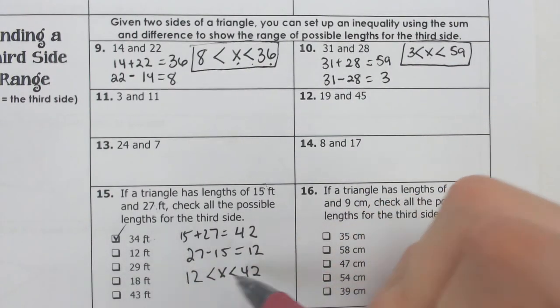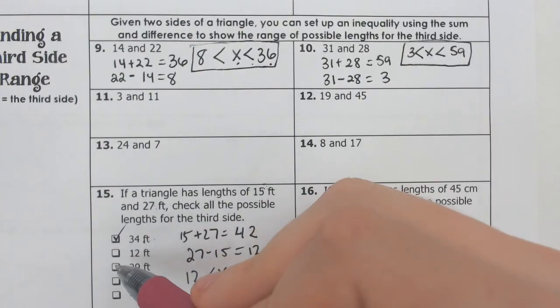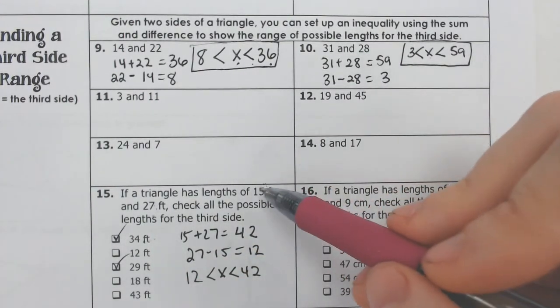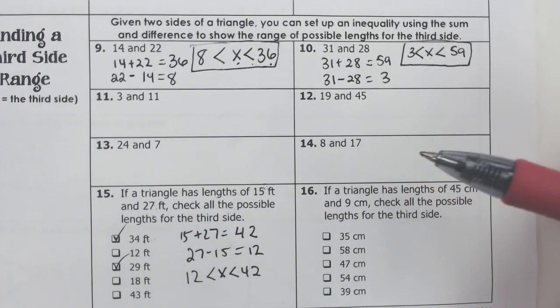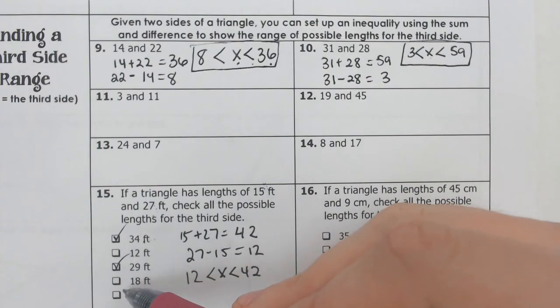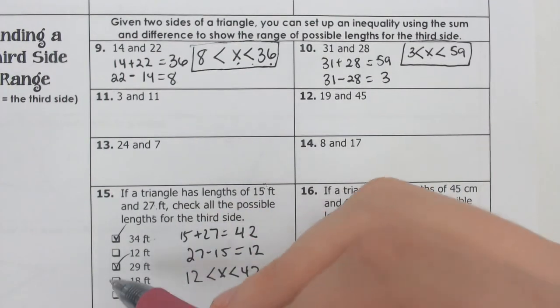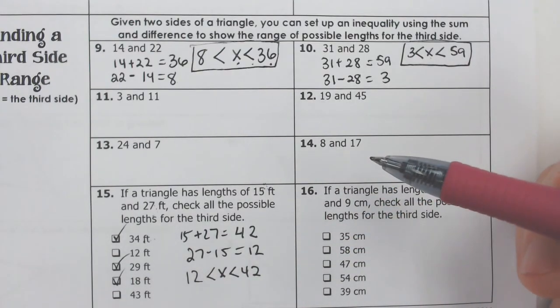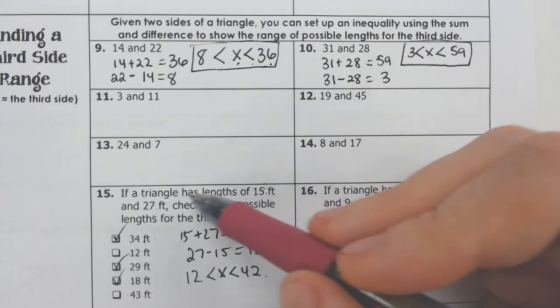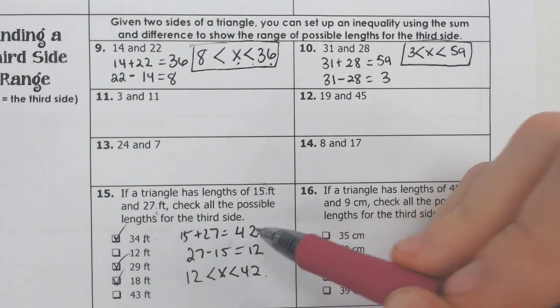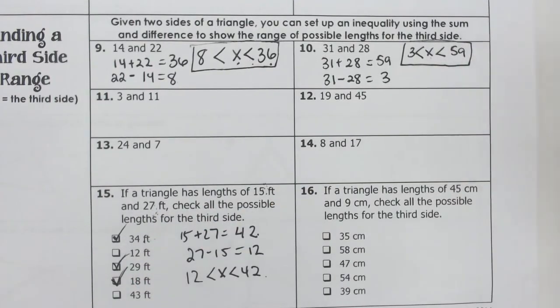What about 29? Now that we got this inequality, we could just think, is 29 in between 12 and 42? Yeah. 15 and 27 definitely add to make more than 29. 18 is in between 12 and 42, and 18 and 15 make more than the 27, the longest side that would be there. 43 is bigger than 42. If you add 15 and 27, you're at 42. That means that 43 is just too big. So these would be the only answers that are possible.